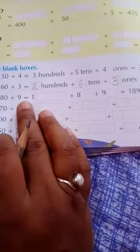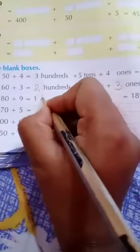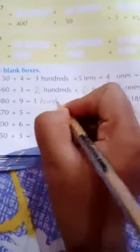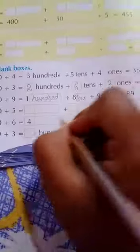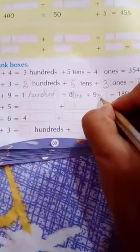100 plus 80 plus 9 is equal to 1. One hundred. One humara hai. Here haa pe kya likhengi haam loo? Hundred. Eight humara kya hai? Tens. And 9 ones. One hundred and eighty nine.